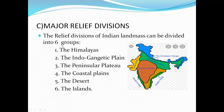Coming to the third part, the major relief divisions. The relief divisions of India's landmass can be divided into six groups: the Himalayas, Indo-Gangetic Plain, Peninsular Plateau, Coastal Plains, Deserts, and Islands. You can see these regions on the map — the blue color represents the Himalayas, green represents the Indo-Gangetic Plain, and the middle part shows the Peninsular Plateau.